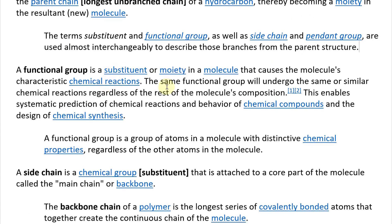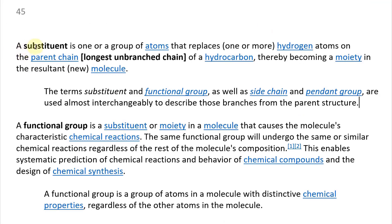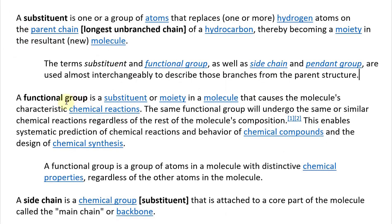A functional group is a substitution or moiety in a molecule. These terms — substitution, functional group, side chain — are almost used interchangeably. But more specifically, a functional group is a substitution or moiety, so it's either of them, pretty much the same thing.